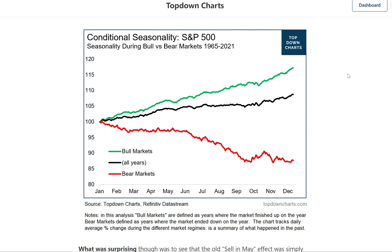To answer this question, I re-ran the usual seasonality analysis, which is where you take an average of the daily price moves across all the years of the sample — by business day. But I also used a quick and rough proxy for bull versus bear markets, defining that as when the market closed the year up versus down. It's a simple, quantitative, easy-to-program rule, which probably means it's imperfect, but close enough.